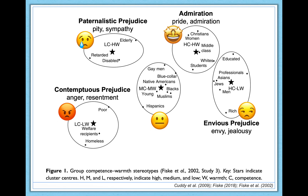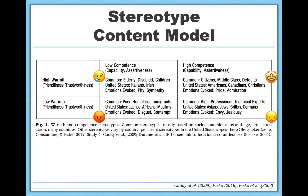And finally, contemptuous prejudice — the low competence, low warmth group is viewed with contempt: anger and resentment are the emotions associated with that cluster. Here is the final model described in one table — along with the emotions each cluster tends to evoke. This table reflects the same information we just covered, presented in a different format so you can conceptualize the model both ways.